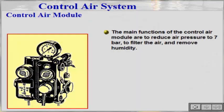The main functions of the control air module are to reduce air pressure to 7 bar, to filter the air and remove humidity.